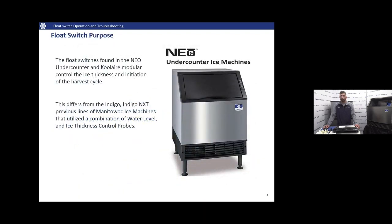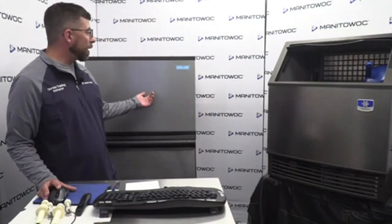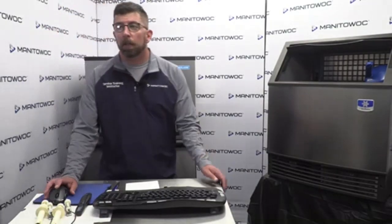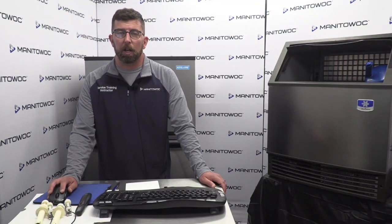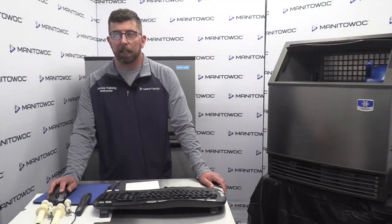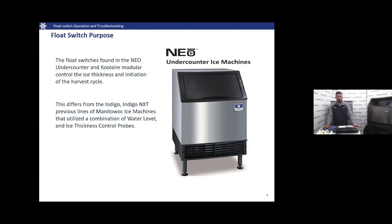The main topic today is float switch purpose and troubleshooting. Our NEO undercounter ice machines and the cool air modular units utilize float switches to control ice thickness and to initiate the harvest cycle. This is a little bit different from our Indigo and Indigo NEXT machines and all previous lines of Manitowocs that typically utilize a water level probe for water level and trough fill, and an ice thickness control probe to initiate the harvest cycle.